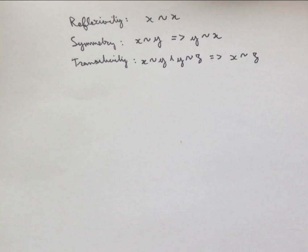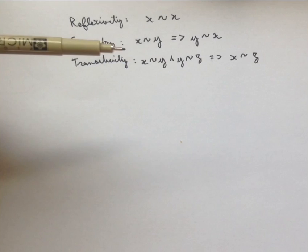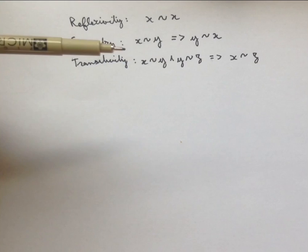One example of an equivalence relation is equals, because we know that for every x, x is equal to x; that if x is equal to y, then y is equal to x; and if x is equal to y, and y is equal to z, then x is equal to z.